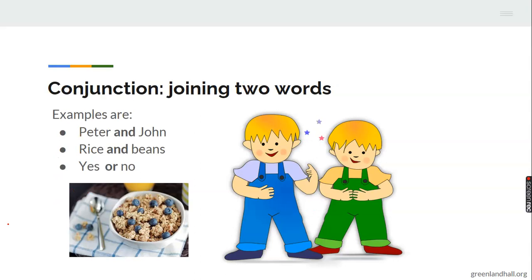Let's see a conjunction being used to join two words together. Examples are: Peter and John. Rice and beans. Yes or no.